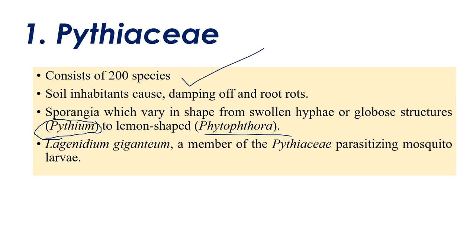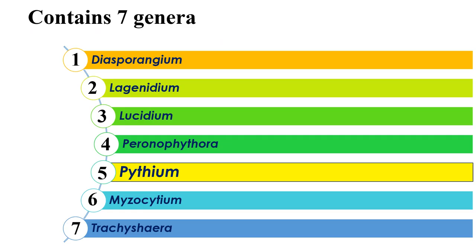Pythium produces globose sporangia, whereas Pythiogetonaceae produces lemon-shaped sporangia. There is also a fungus called Lagenidium giganteum, a member of Pythiales, which parasitizes mosquito larvae. At present there are 7 genera in Pythiales. Among all these genera, only Pythium generally causes damping off diseases in vegetables and other diseases.